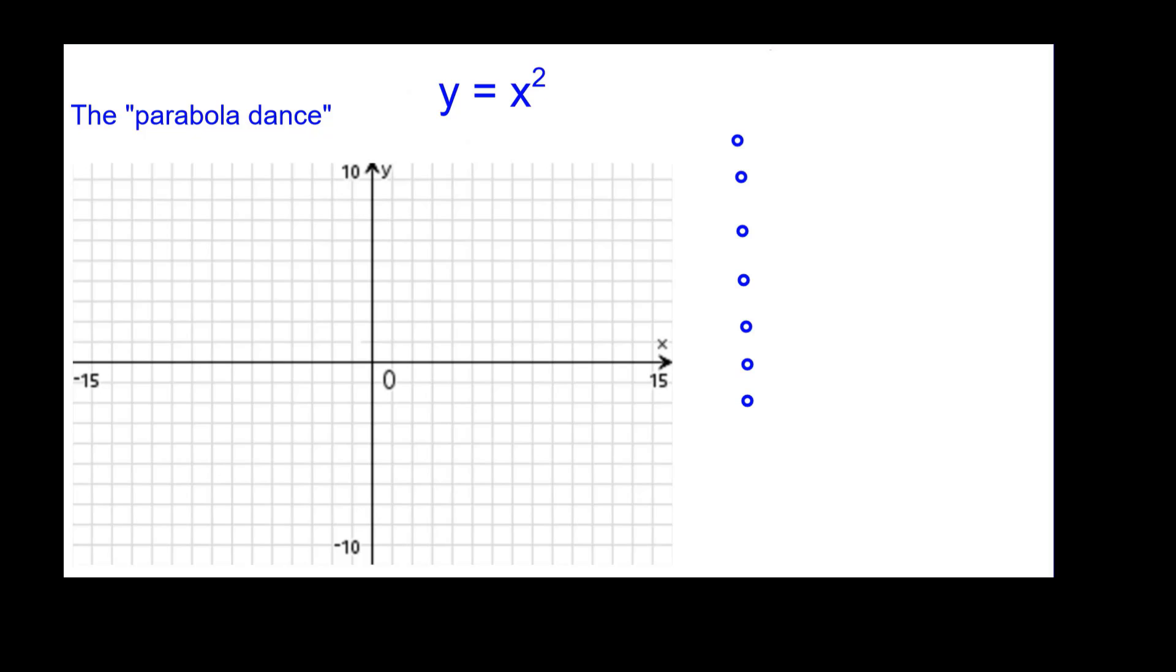Now let's look at how you would graph this using what we call the parabola dance to give you a feel for what that would mean. We'll start with the vertex. From there, we will go right 1 up 1 because when you square 1 you get 1. We'll go right 2 and up 4 because when you square 2 you get 4. And right 3 up 9. 3 squared is 9.